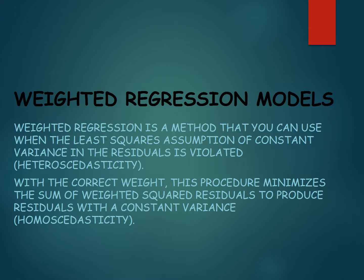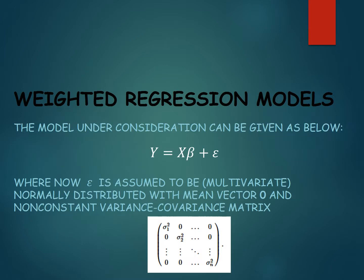Weighted regression is a method that you can use when the least squares assumption of constant variance in the residuals is violated. With the correct weight, this procedure minimizes the sum of weighted squared residuals to produce residuals with a constant variance. The model under consideration can be given as below, where epsilon is assumed to be normally distributed with mean vector zero and a non-constant variance-covariance matrix.